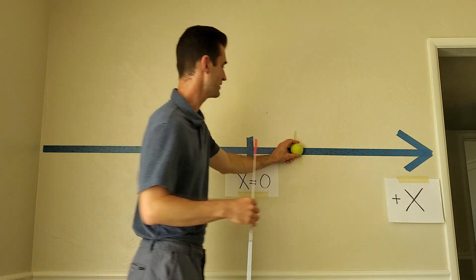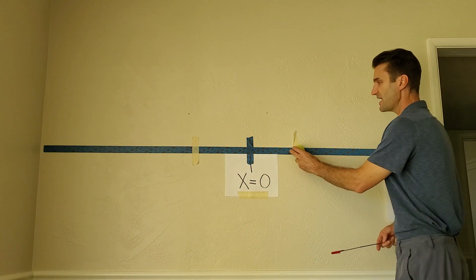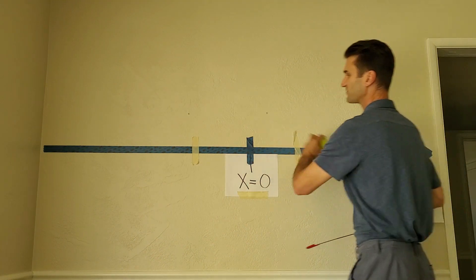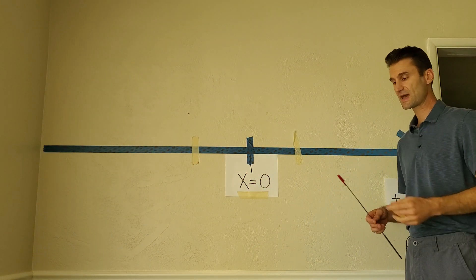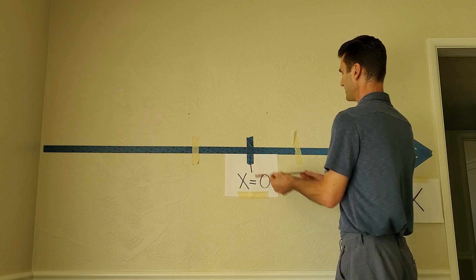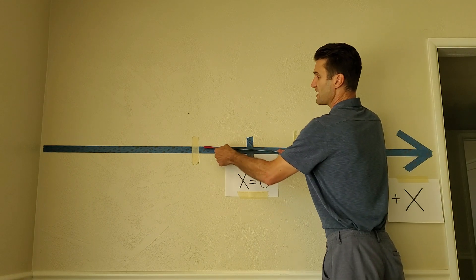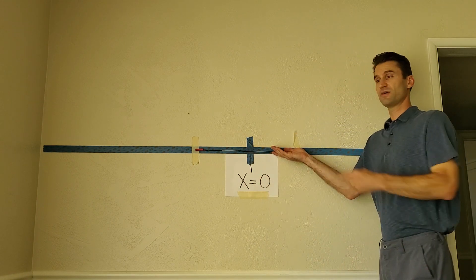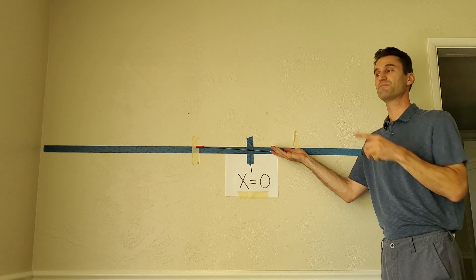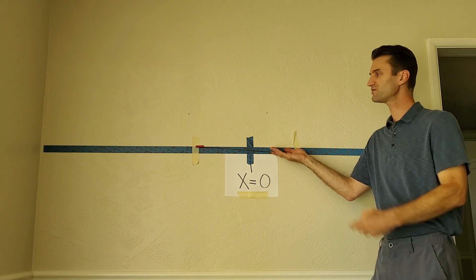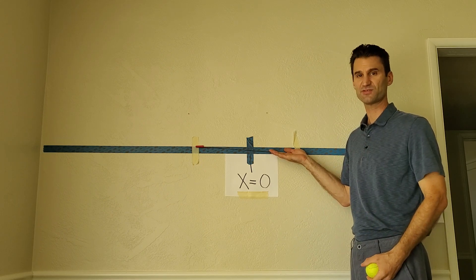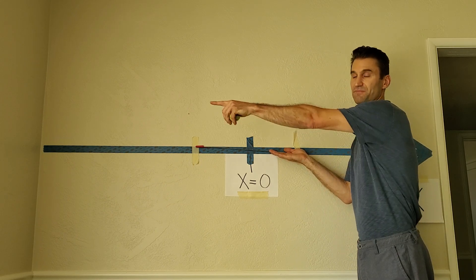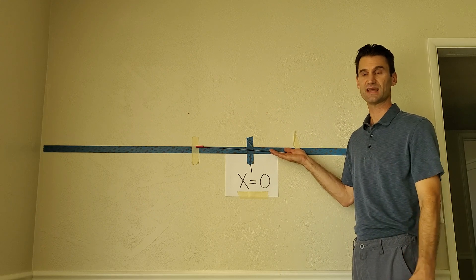Suppose we started here instead as our initial position, and we moved around a bit, did some stuff, but we ended here. Final position. What does the displacement look like now? Now it's an arrow that starts in this position and has the length from initial to final position, and it points to the left in the negative direction. So this displacement vector has the same magnitude, same length as the previous one, but the direction is opposite. It points the negative direction.